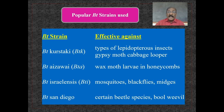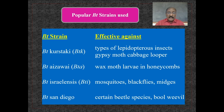There are various strains of Bt. Bt kurstaki (Bt K) is effective against Lepidopterous insects such as gypsy moth and cabbage looper. Bt aizawai (Bt A) is effective against wax moth larvae in honeycombs. Bt israelensis (Bt I) is effective against mosquitoes, black flies, and midges. Bt san diego is effective against certain beetle species.